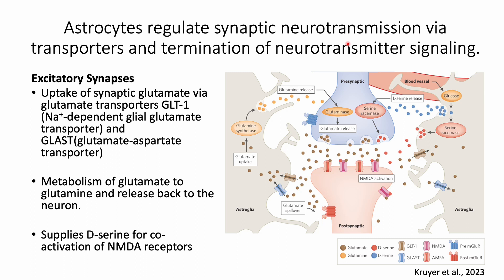Astrocytes regulate synaptic transmission by taking up neurotransmitters and help stopping neurotransmission. This occurs at both excitatory and inhibitory synapses. At excitatory synapses where glutamate is released, astrocytes take up glutamate using two transporters, GLT-1 and GLAST.